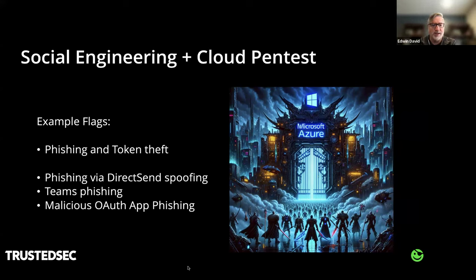Sometimes if Microsoft Teams default settings are still enabled on the tenant, we can type in the targeted user and see when they're at their desk or away, making the timing richer for sending that email to initiate token theft. Direct Send is another option — a Microsoft service designed for multifunction printers — where you can spoof an account and make it look like the user is coming from inside. If external presence is allowed in Teams — someone from a completely separate Azure tenant allowed to talk to one of your users — you can send a phishing message through Teams. Malicious OAuth app phishing is another vector: we register an application to have persistent access to users who click on it, such as getting mail-read rights, which doesn't require administrative consent.